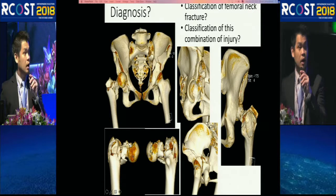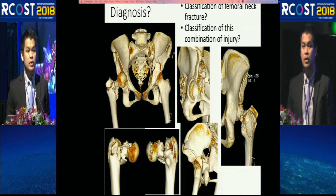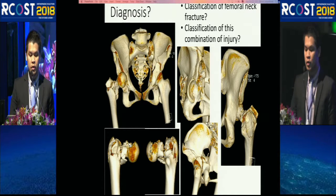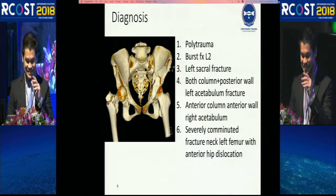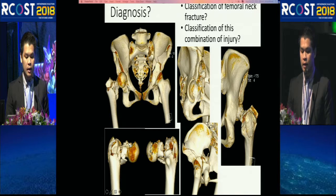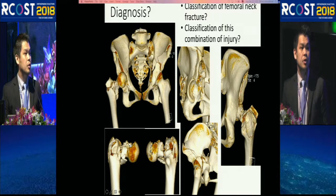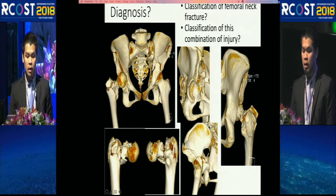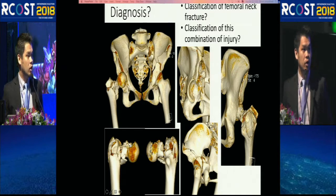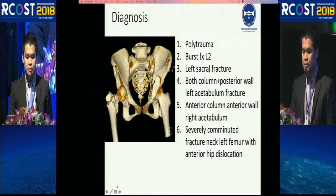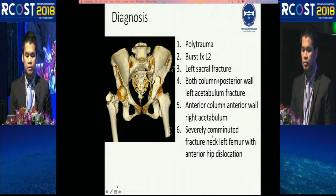There is some comminution of the neck and intertrochanteric area — you can see the neck is dislocated to the front. This is a very complicated injury. I have difficulty finding a good classification, especially for the femoral neck fracture. The unusual pattern on the right is that the neck is very comminuted, and you don't often see an anterior column with anterior fracture, with impaction of the joint. The both-column pattern is also uncommon — it's more like an anterior-posterior hemi-transverse with posterior wall fracture. So in summary: left sacral fracture with both-column and posterior wall acetabular fracture; right anterior column, anterior wall fracture with fracture-dislocation of the femoral neck.